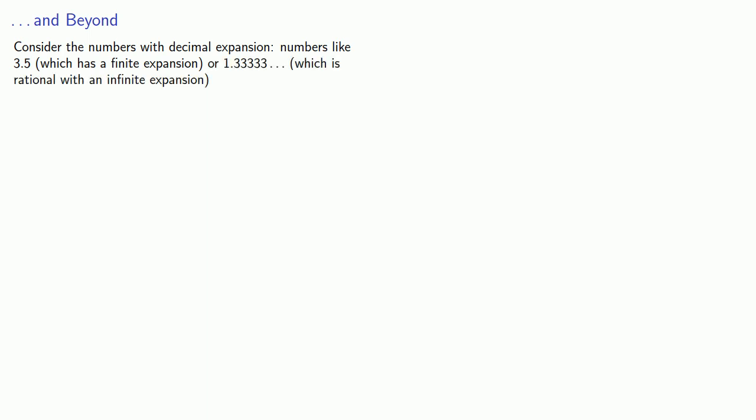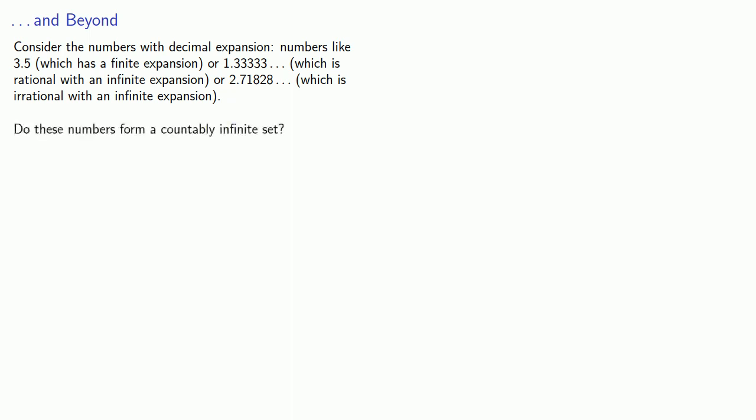Let's consider the numbers with decimal expansions — numbers like 3.5, which has a finite expansion, or 1.3 repeating, which is rational with an infinite expansion, or something like this, which is irrational with an infinite expansion. Do these numbers form a countably infinite set?